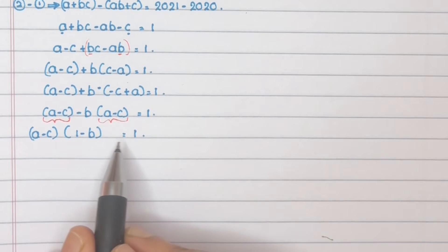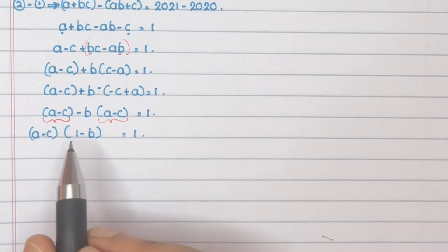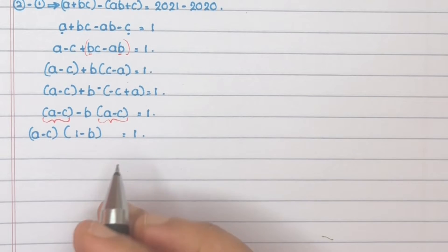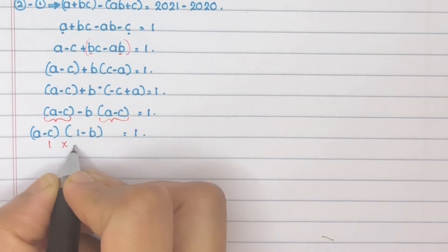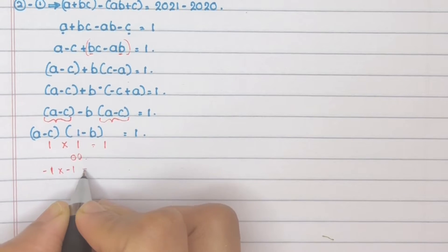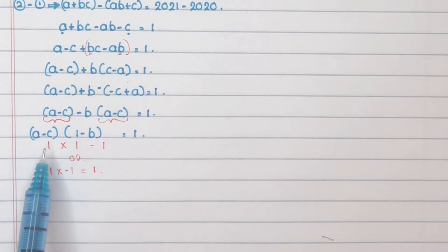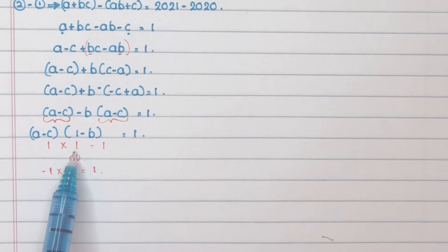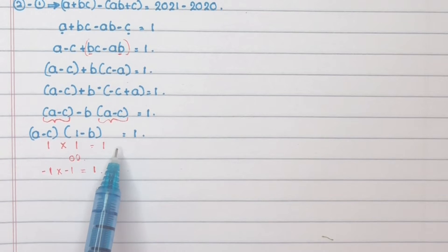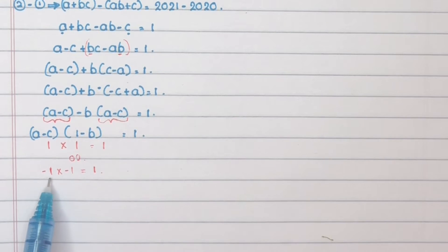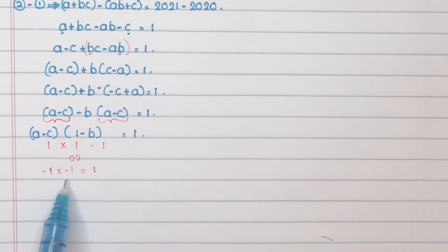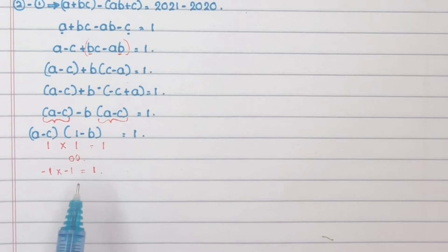Taking out A minus C as a common factor gives (A minus C)(1 minus B) equals 1. Since A, B, and C are integers, the product of two integers equals 1. This means either both factors equal 1, giving 1 times 1 equals 1, or both equal minus 1, giving minus 1 times minus 1 equals 1.